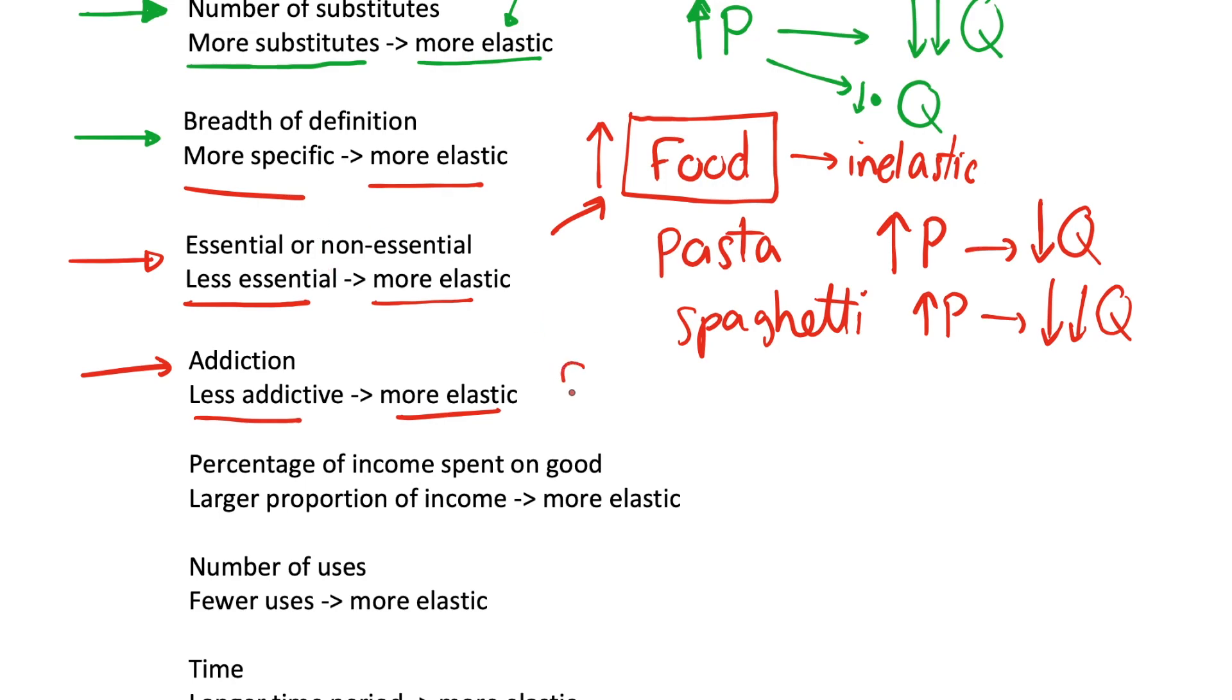We can think of things like cigarettes for this one. So we may think of cigarettes as not being something that's essential to our survival, but once you've started consuming them and you get addicted to them, they become more essential to you. So it's harder to switch away from them once you've started. And if you smoke a lot of cigarettes a day and the price increases, you're going to be quite inelastic to that change in price. You're going to keep buying cigarettes because you're addicted.